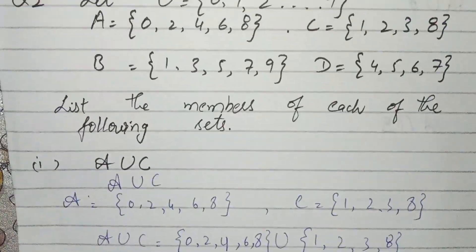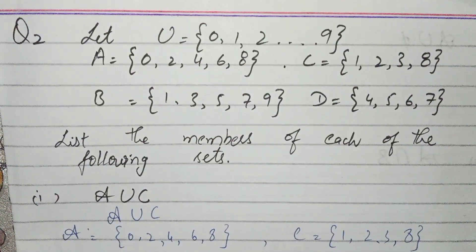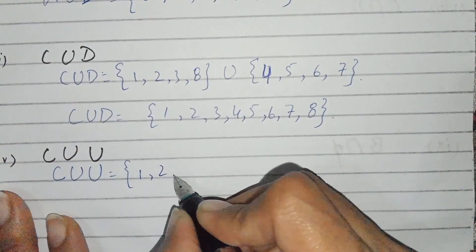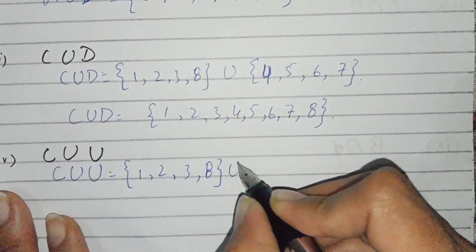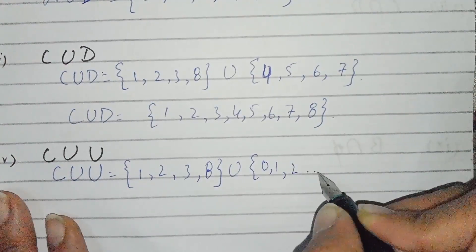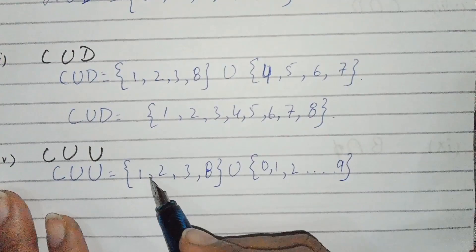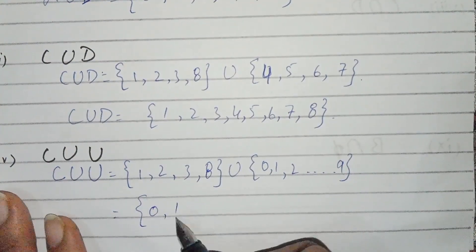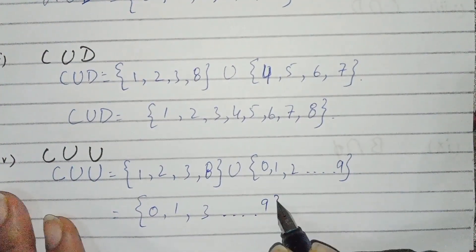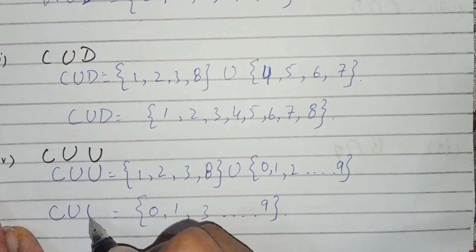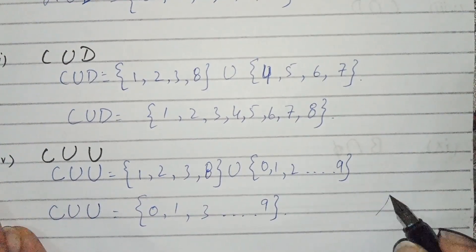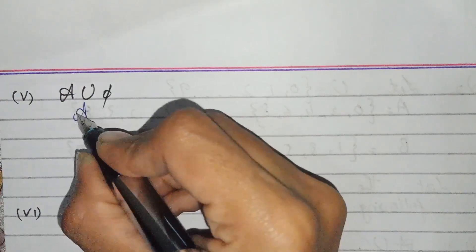The universal set U in the question is from 0 to 9, so we write those values. Now C union U: C is {1,2,3,8} and U is {0,1,2,9}. When we combine, we get {0,1,2,3,8,9}. This is C union U, and part number four is solved.